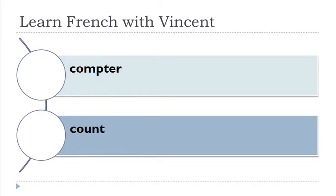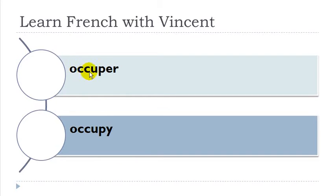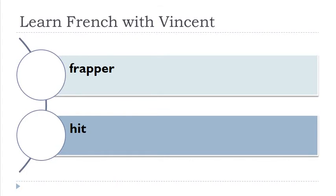Compter — 'o-m' is really a nasal 'on', and then this 'p' is not pronounced. Compter. Occuper — you don't pronounce the double 'c', so it's really like 'occuper'. Expliquer. Frapper.